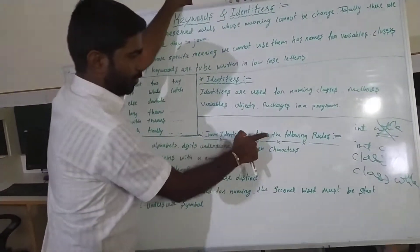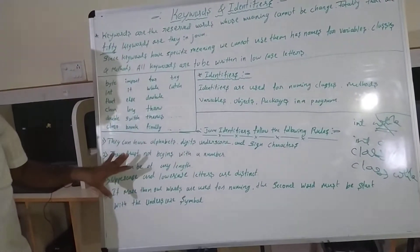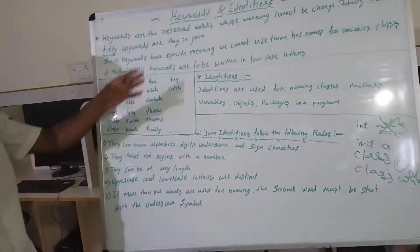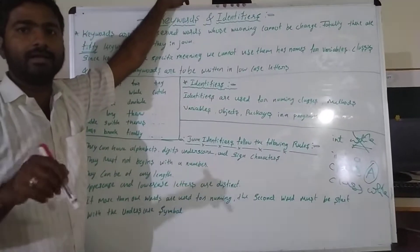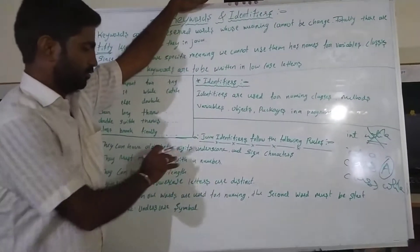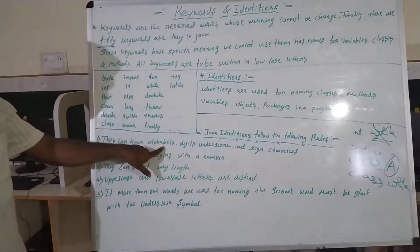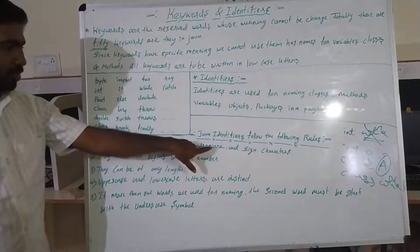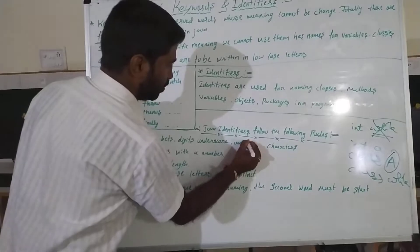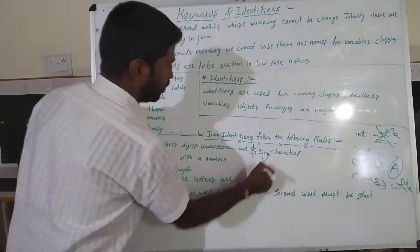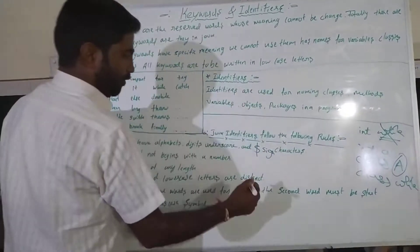Java identifiers follow certain rules. The question is: what rules should be followed while declaring an identifier? Rule one: identifiers can have alphabets, digits, underscore, and dollar sign characters.